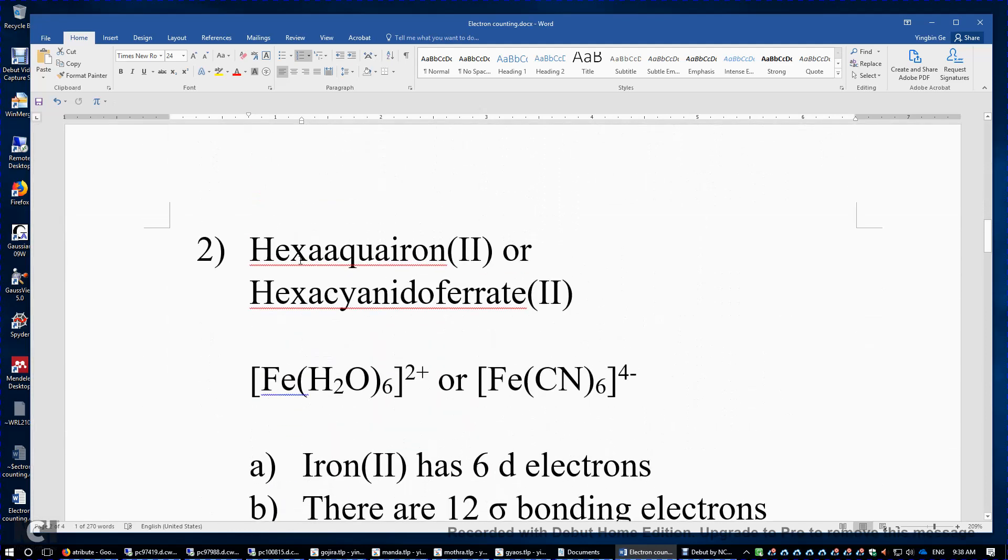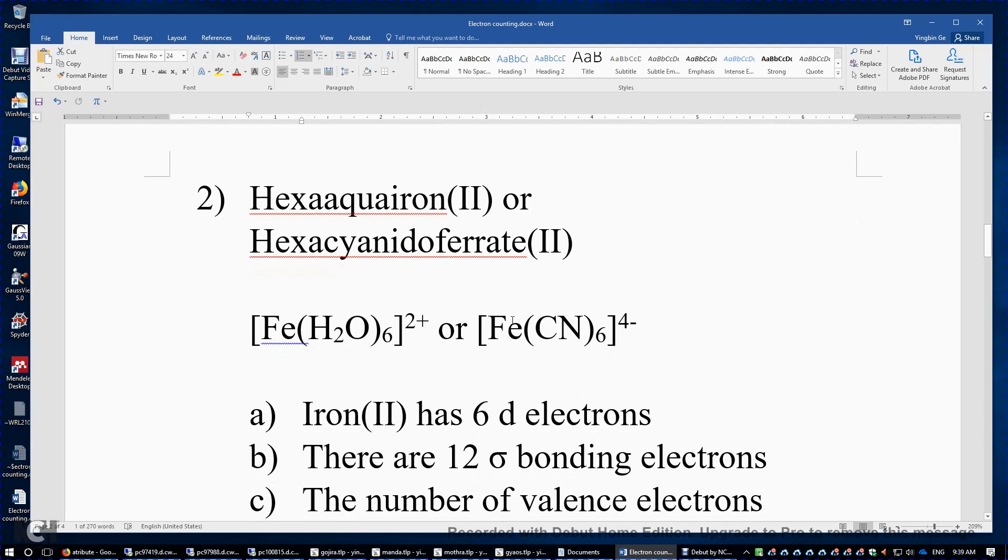And then an easy example, hexaaquairon(II) or hexacyanidoferrate(II). So they have actually the same number of electrons surrounding the transition metal center. The formulas are here.